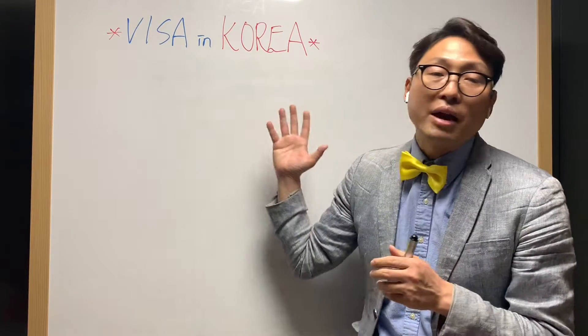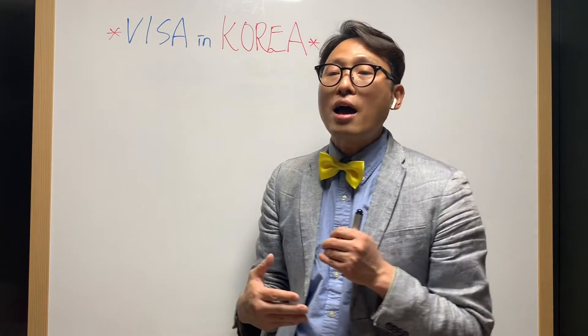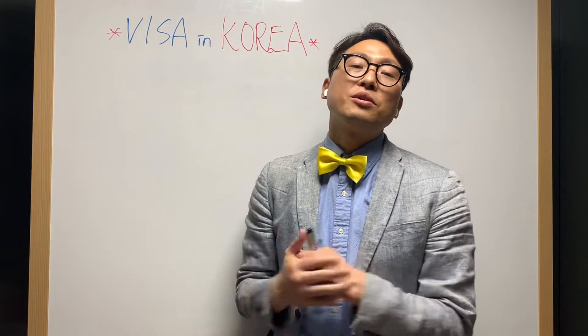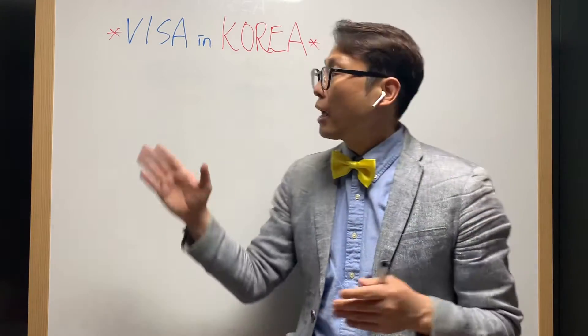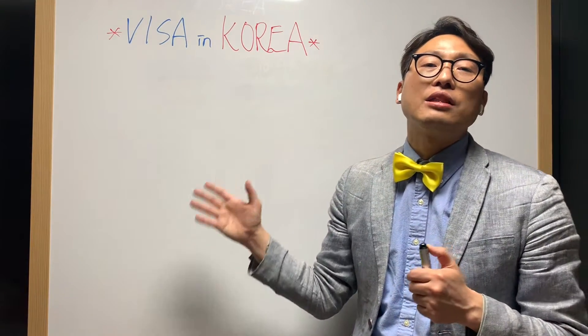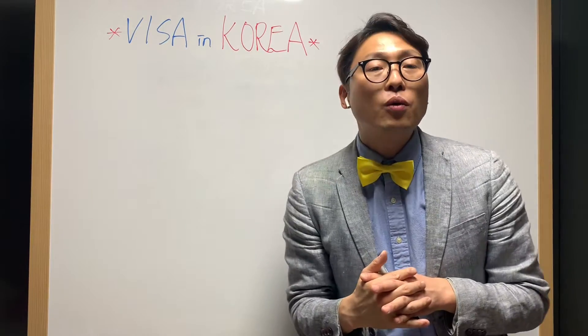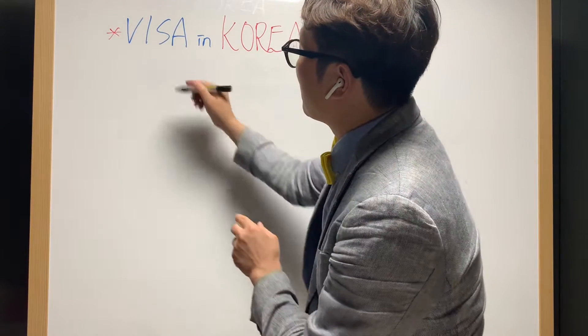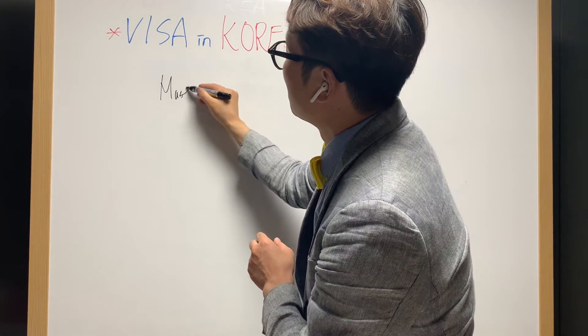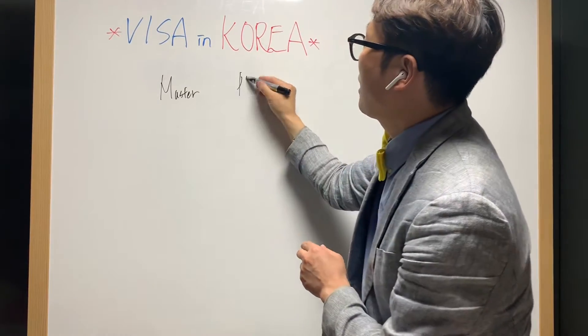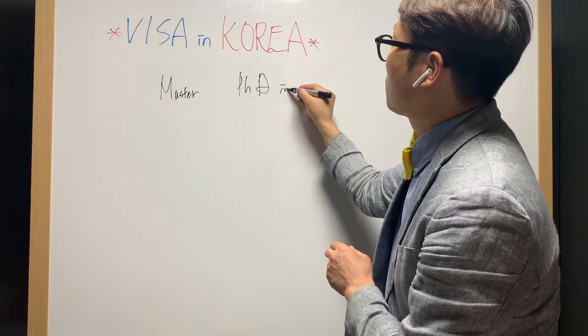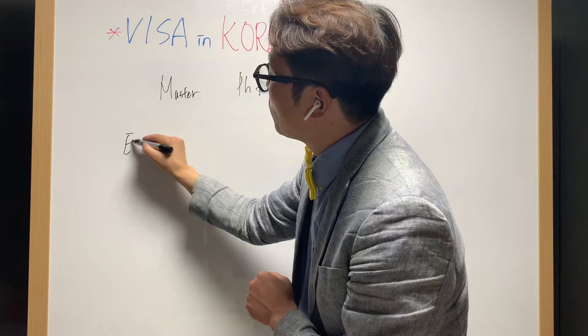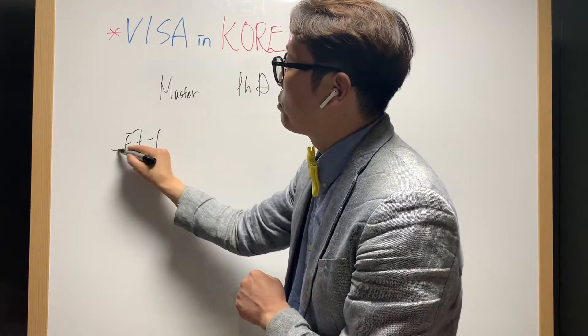I will let you know the basic information if you have a master's degree in Korea or a PhD degree from Korea. I'll explain which kind of visa process is required to get an F5 visa. Right now you got a master's or PhD in Korea, you have an E7-1 visa, and you're working in a professional field.